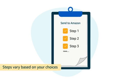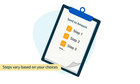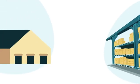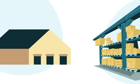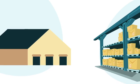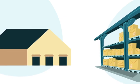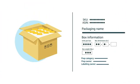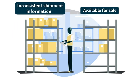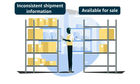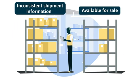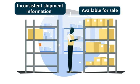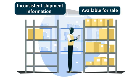Note the steps you see may vary based on your choices. The first step in the workflow is providing box content information. Knowing the contents of each box allows us to move your inventory rapidly through our network with minimal manual touches. Providing accurate box content information also reduces the chances of boxes getting sidelined due to inconsistent shipment information, thereby making your inventory available for sale faster.